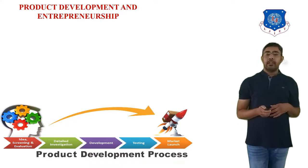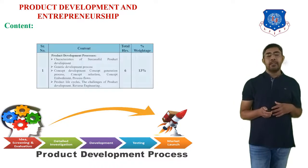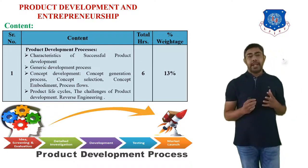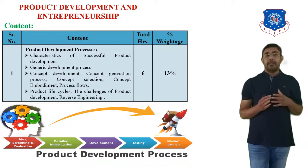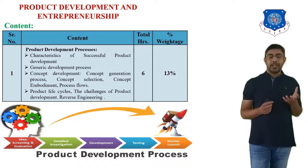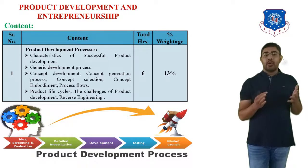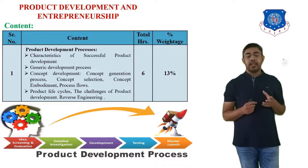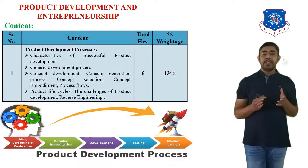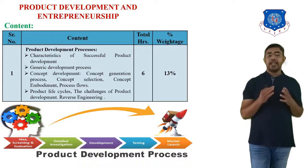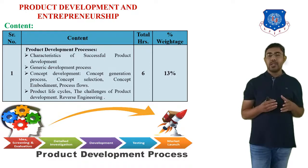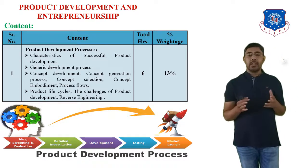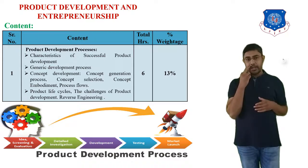Now, the first chapter of Product Development and Entrepreneurship is the Product Development Process. The Product Development Process covers stages from Idea Generation and Screening all the way to launching that product in a particular market. This whole sequence of stages is known as the Product Development Process.